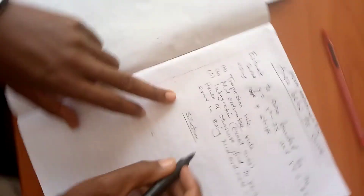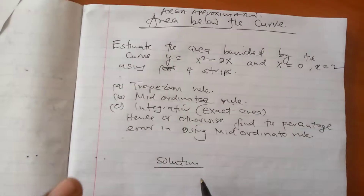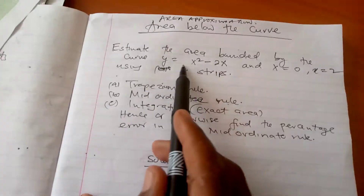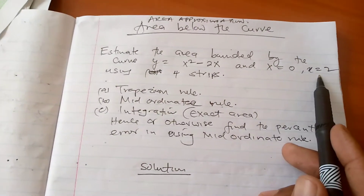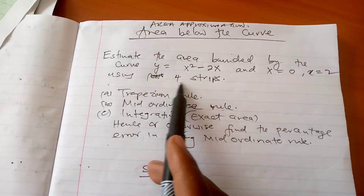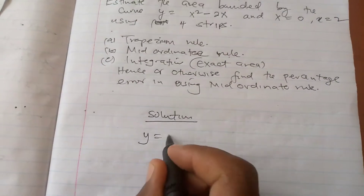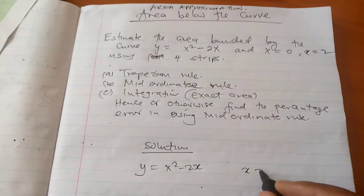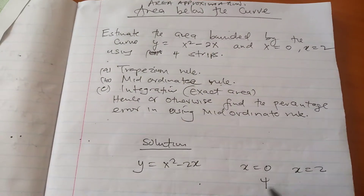The first thing I'm going to advise you to always make sure you have is a diagrammatic representation of the curve from x equals 0 to x equals 2, and you also focus on the number of strips. In our case we have 4 strips. So I'm going to sketch the curve y equals x squared minus 2x, from x equals 0 to x equals 2, with 4 strips.